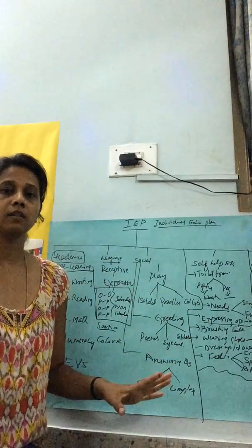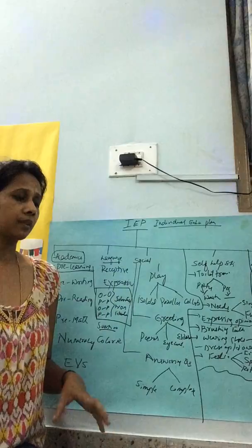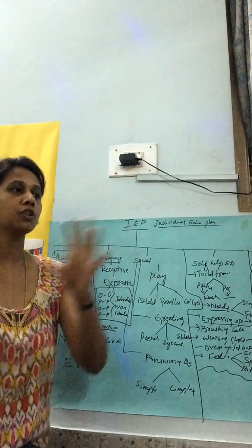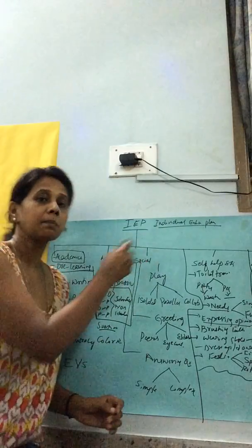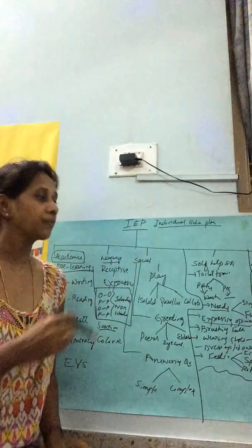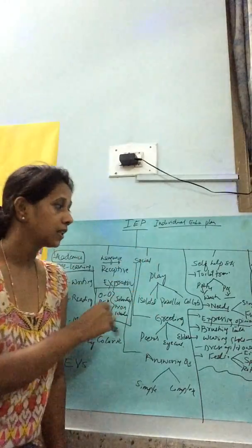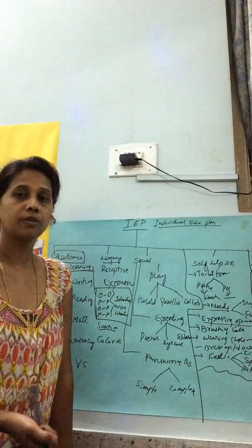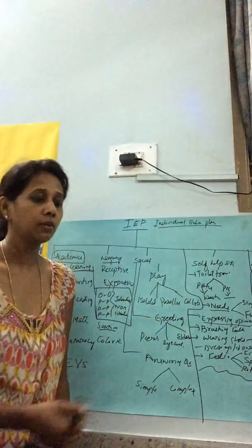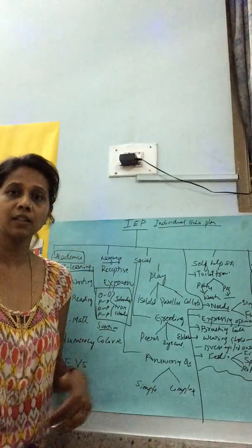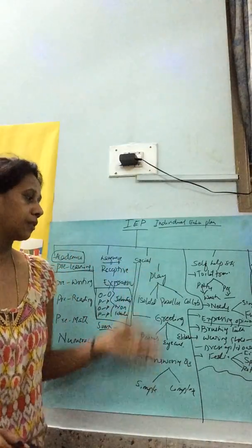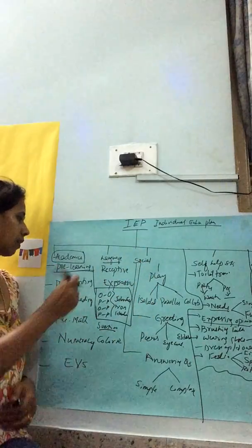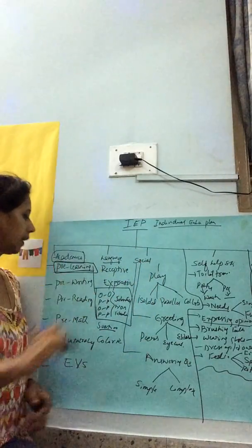After color recognition comes shapes — basic shapes: square, circle, rectangle, triangle. As opportunities come up in daily life, start introducing shapes: 'Look at this plate, it's a circle.' 'Look at the samosa, it's a triangle.' 'The door is a rectangle.' 'This book is a rectangle shape.' Introduce shapes slowly in daily context.